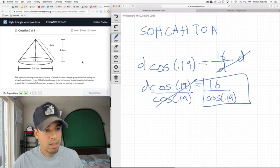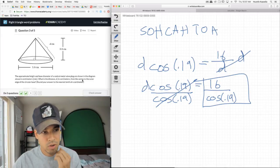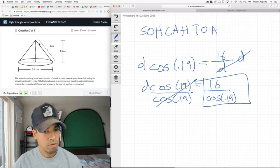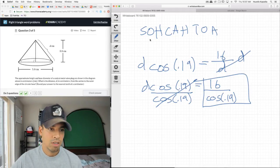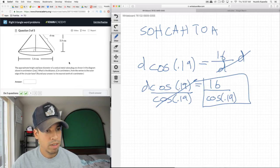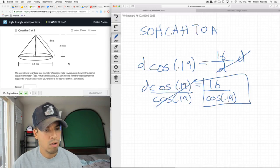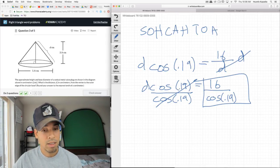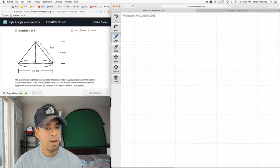The approximate height and base diameter of a conical metal valve plug are shown in the diagram above in centimeters. What is the distance D from the vertex to the outer edge of the circular base? We need to find D. We're given this information. This is just a standard right triangle Pythagorean theorem problem. I can also see that this looks like an equilateral triangle with these markings, though it doesn't say specifically. I'm going to err on the side of caution.